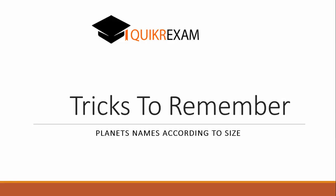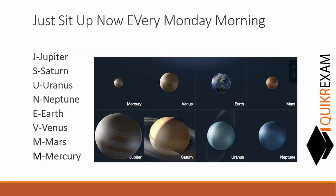In a few seconds we will arrange all the eight planets of our solar system according to their sizes, starting from the bigger to the smaller planets. For this we have to learn a single line.